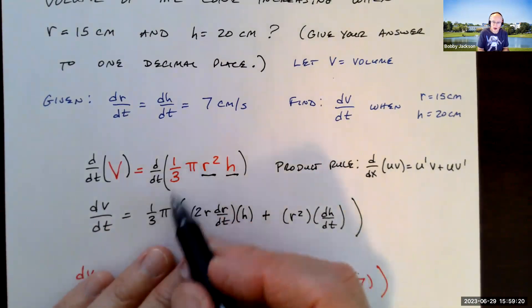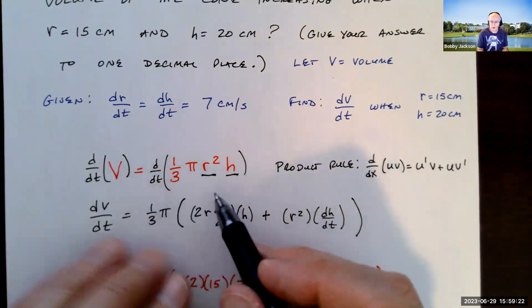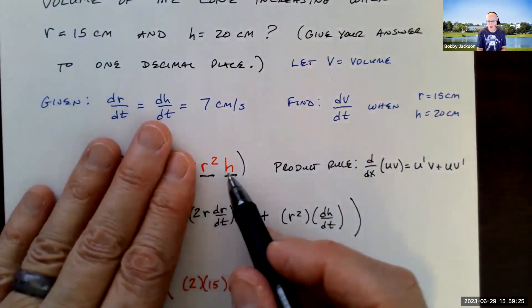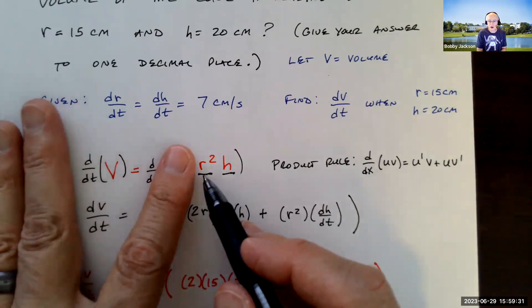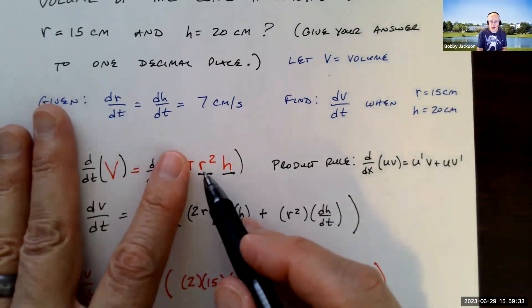Now, this one-third pi, I'm just going to pull that out as a constant multiple. And so I'm going to take the derivative of r squared times h, and then r squared times the derivative of h with respect to t. So what's the derivative of r squared with respect to t? Well, it's chain rule because r is a function of time.